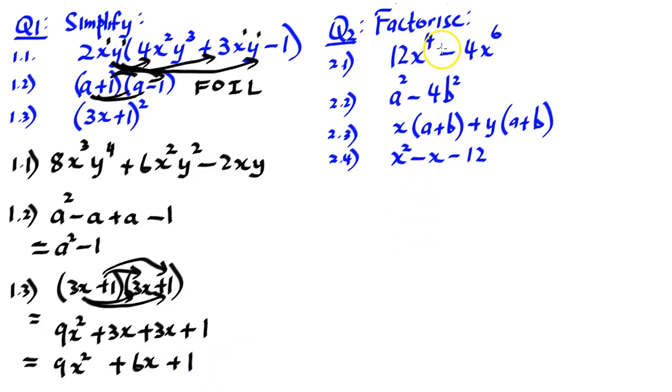Now we're going to be looking at factorization. Let's look at the first example, 2.1: 12x to the 4 minus 4x to the power 6. In factorization, we must always look to remove a highest common factor first. The HCF is 4. The HCF of x to the 4 and x to the 6 will be x to the power 4. Now we'll open a bracket because we removed 4x to the power 4 as a common factor.